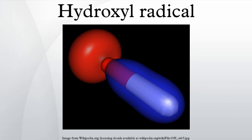The first reaction with many volatile organic compounds is the removal of a hydrogen atom, forming water and an alkyl radical: ·OH + RH → H2O + R·. The alkyl radical will typically react rapidly with oxygen forming a peroxy radical: R· + O2 → RO2.